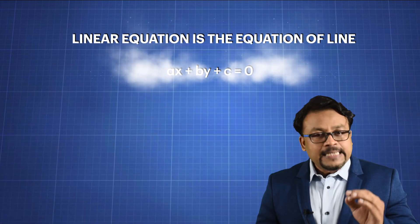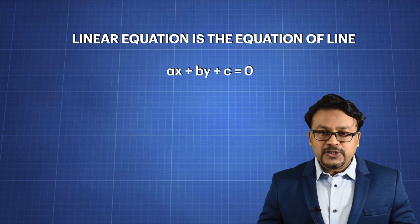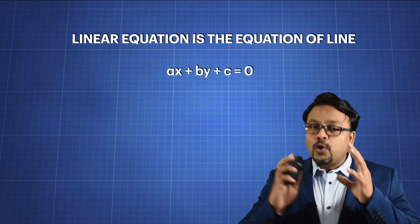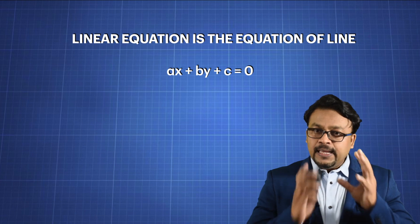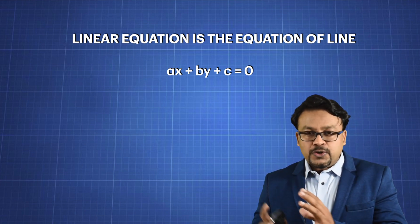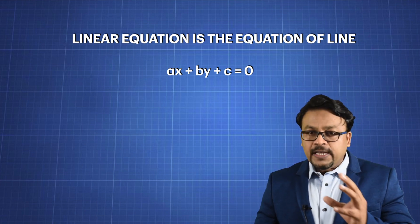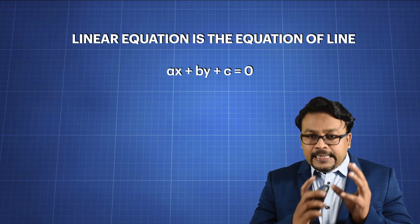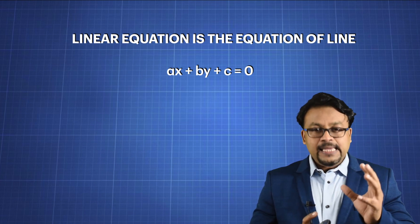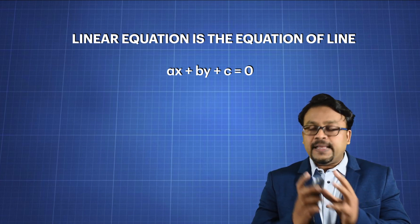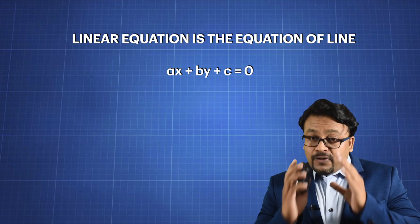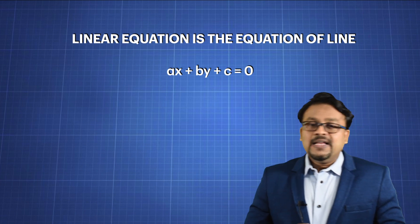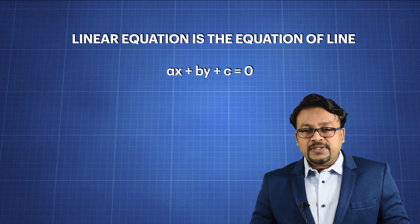Now before we go ahead, I hope you all know that a linear equation is the equation of a line which is given by AX plus BY plus C equals to 0. This is the standard form. There are two variables X and Y, and the coefficient of X is A, the coefficient of Y is B, and the constant is C. You all have learned this in the previous standard.